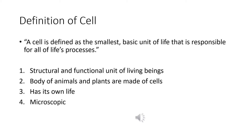On its own. A cluster of cells gives tissues, then a cluster of tissues gives organs, and different organs make up a system, and they also perform the same life processes. So a cell is complete in itself, and that is why it is the structural and functional unit of living beings. The body of animals and plants are made of cells.